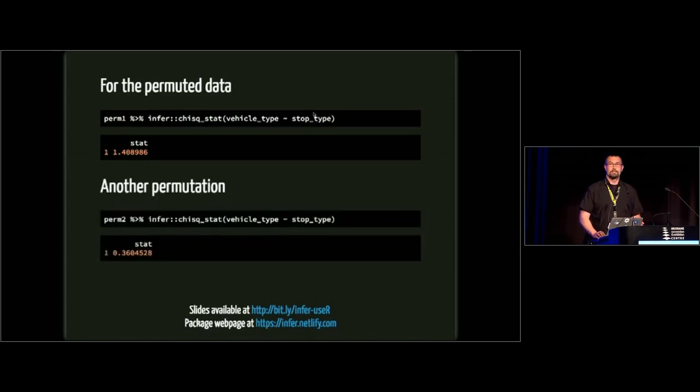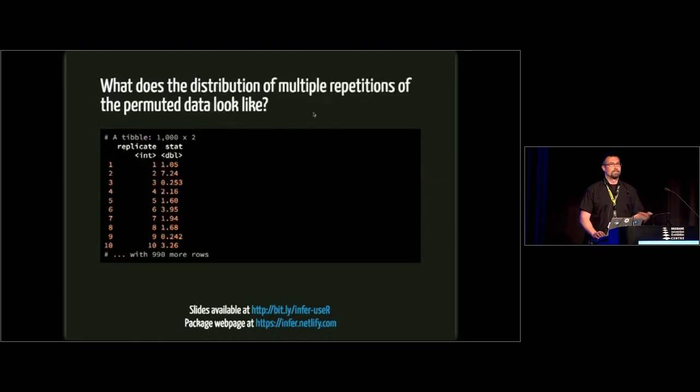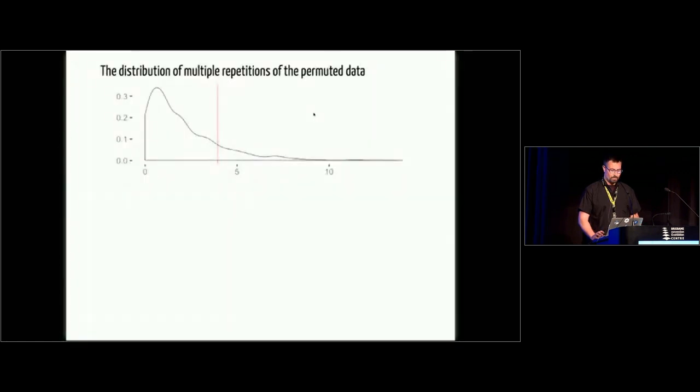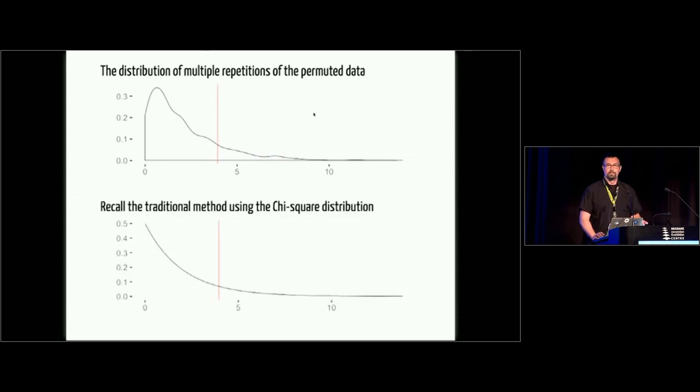You can do this in two different ways. In the infer package we have chisq_stat, that's just a wrapper to pull out that statistic. Or you can do dollar sign statistic and get that chi-square value of 3.95. For the permuted data, so that was for the original data, for the permuted data the statistic is 1.41 somewhere around there. If we did another permutation, we get a different test statistic. So here we get 0.36. This is very, when I was teaching introductory statistics, this was the buildup that I would show students. We do this over and over again, and I would say, well what if we did this a thousand times? If you do this a thousand times, you get something that looks like this with a thousand different simulated test statistics.